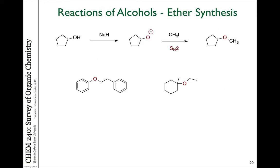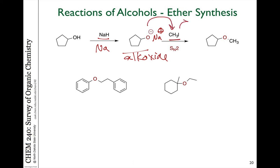We talked about substitution reactions in the last chapter, and I want to mention that this substitution reaction can be used to make ether molecules using the chemistry we've just talked about. So if you take an alcohol and react it with sodium metal or sodium hydride, you can make the sodium alkoxide molecule that is now a good nucleophile. And if you react that with something like iodomethane to do an SN2 substitution reaction, you can generate this methyl cyclopentyl ether.